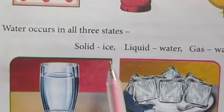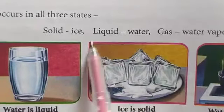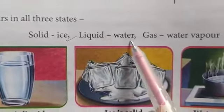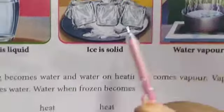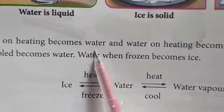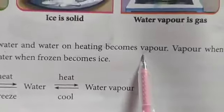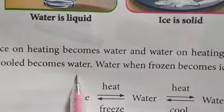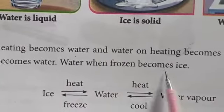Water can occur in all three states. In the solid state it is ice, in the liquid state it is water, and in the gaseous state it is water vapor. When we heat ice, it becomes water. If you continue heating the water, it becomes vapor. When vapor cools, it turns into water. And when water is frozen, it becomes ice.